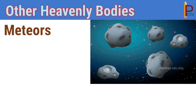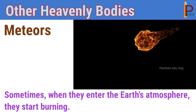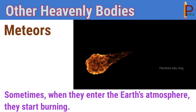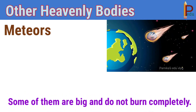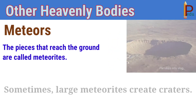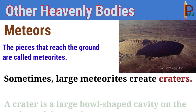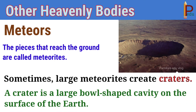Meteors or meteoroids are small pieces of rocks revolving around the sun. Sometimes, when they enter the earth's atmosphere, they start burning. Some of them are big and do not burn completely. The pieces that reach the ground are called meteoroids. Sometimes, large meteoroids create craters. A crater is a large bowl-shaped cavity on the surface of the earth. Cavity means a hollow space.